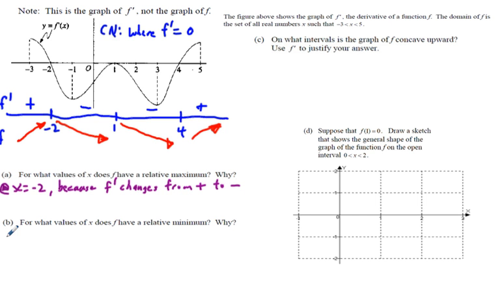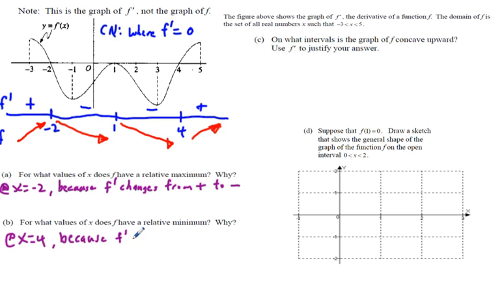For part b, for what values of x does f have a relative minimum? Similarly to finding the relative maximum, a relative minimum is found where f' of x changes from negative to positive. So we have a relative minimum at x equals 4. Why? Because f' of x changes from negative to positive. That takes care of parts a and b pretty easily.